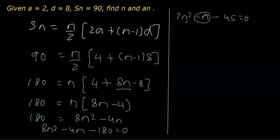Now I have to factorize by the product of 2 and 45. 45 into 2 is 90. I can split 90 as 10 into 9, because we need minus 1. So this is 2n² - 10n + 9n - 45 = 0.